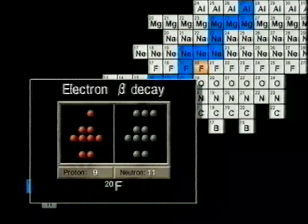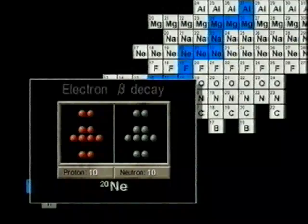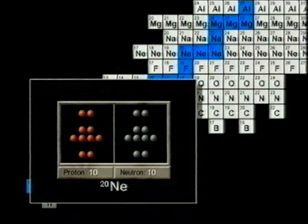Fluorine-20 is also unstable. Therefore, beta decay again occurs, causing a change to Neon-20. The Neon-20 nucleus is stable, so no further decay occurs.